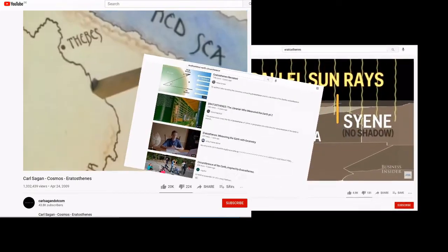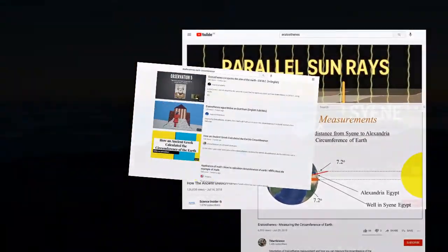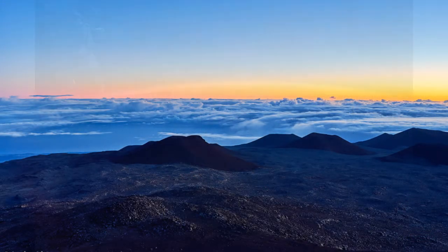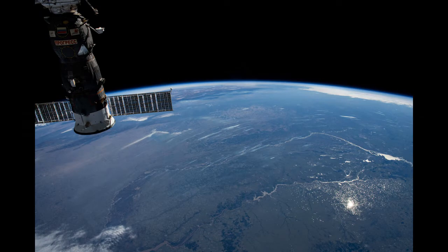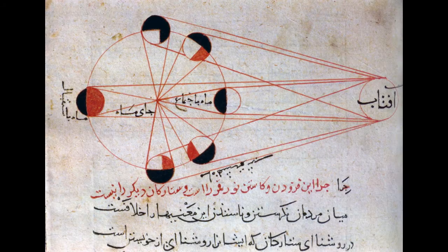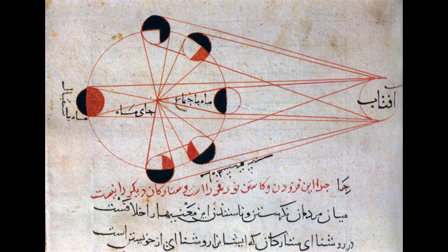The dip of the horizon when seen from an elevated location like a mountain. This way to measure Earth's circumference was invented by Abu Rayhan al-Biruni, a Persian scholar and polymath of the 11th century. It's simpler than Eratosthenes' method yet no less ingenious.